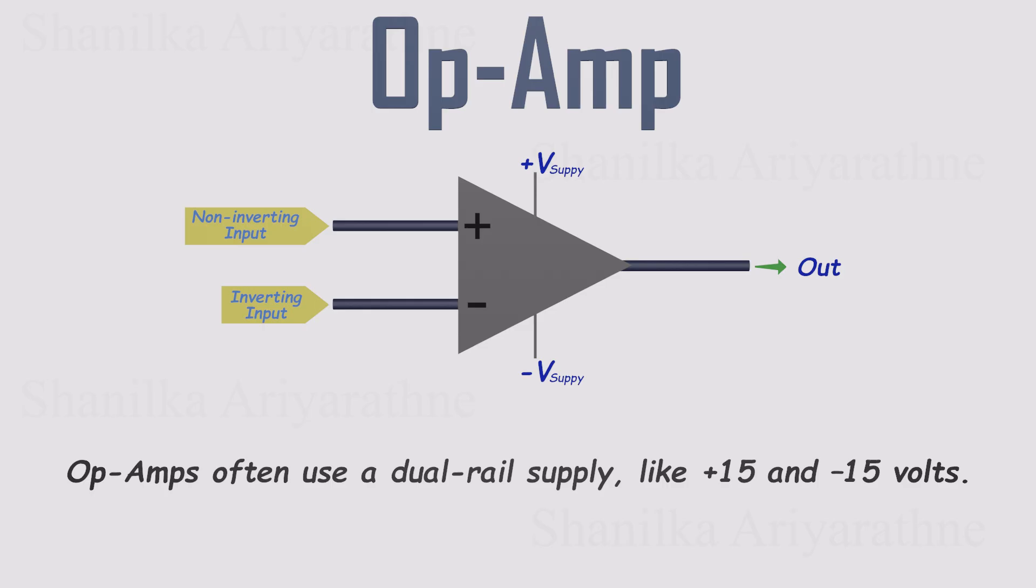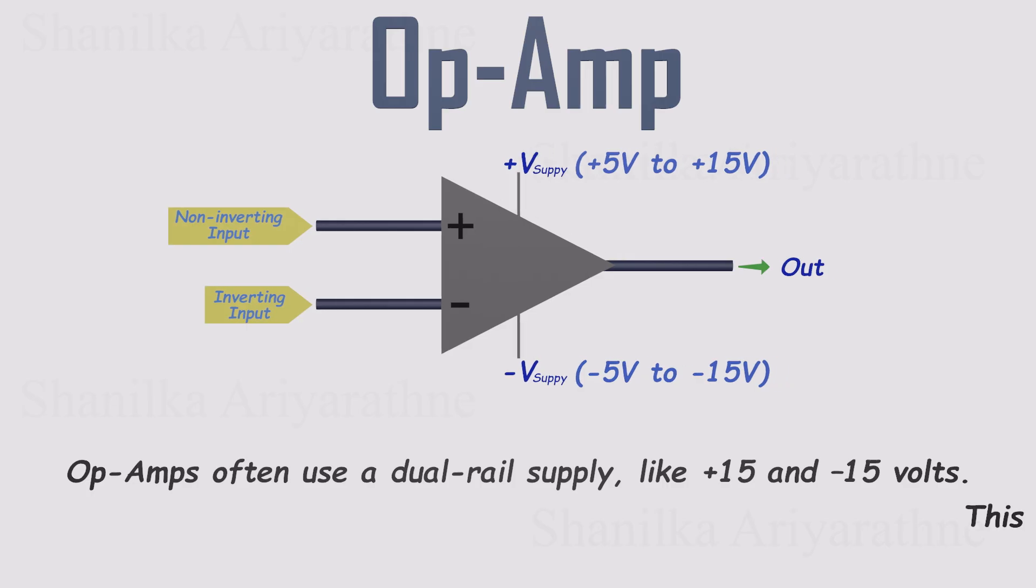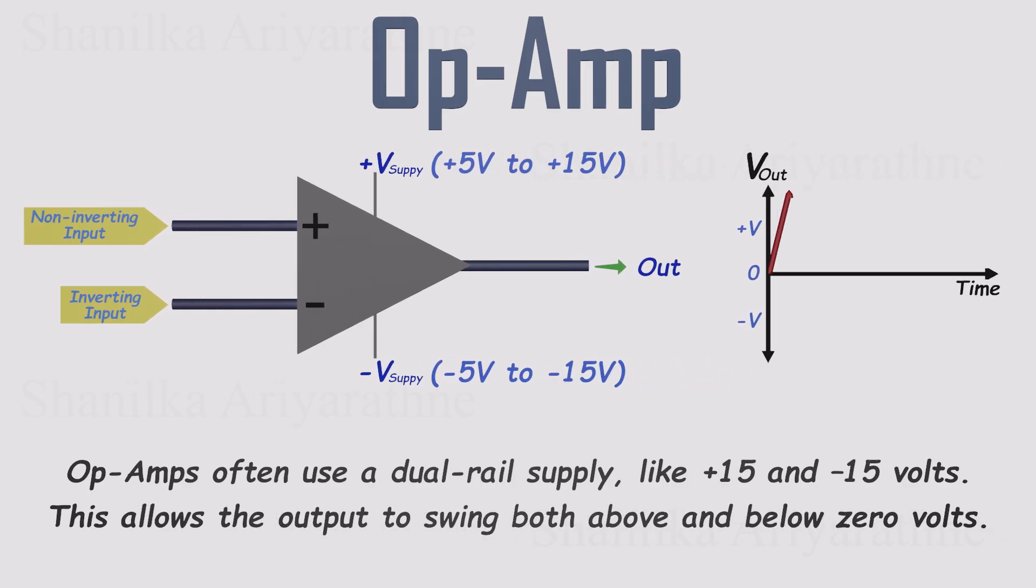That means one rail provides a positive voltage, say, anywhere from plus 5 to plus 15 volts, and the other provides a negative voltage, like minus 5 to minus 15 volts. With both rails connected, the op-amp's output can swing above and below 0 volts, which is perfect for handling signals that go positive and negative, like AC waveforms.